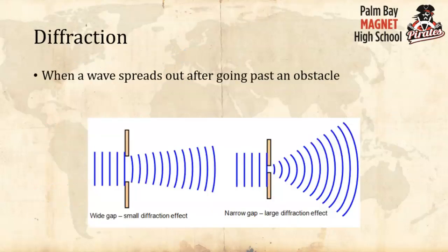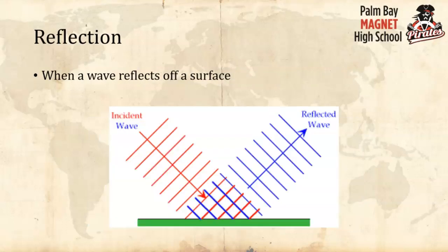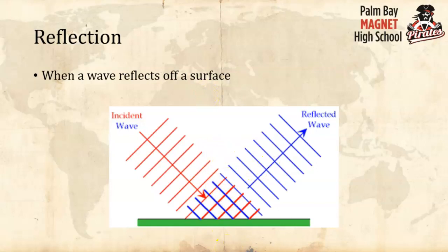I wanted to review the difference between diffraction, refraction, and reflection. Reflection is easy enough — we've talked about that with mirrors. It's where a wave simply reflects off a surface, bound by the law of reflection: the angle of incidence equals the angle of reflection.